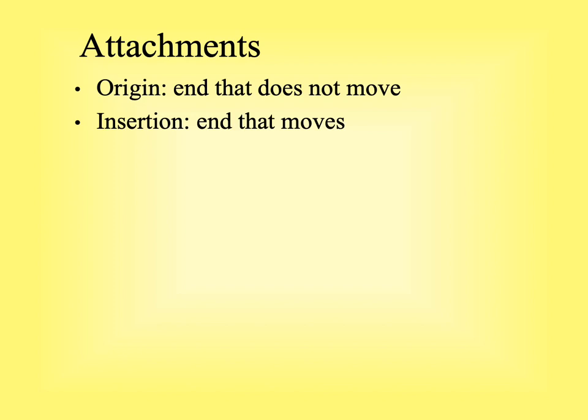For attachments, we have two references based on kinematics of motion. The origin is the end that does not move during contraction; the insertion is the end that does move. However, this can flip depending on whether it's an open or closed chain motion, so it may be simpler to just indicate the attachment points rather than strict origin and insertion, since origin and insertion will flip based on the kinematics of movement.